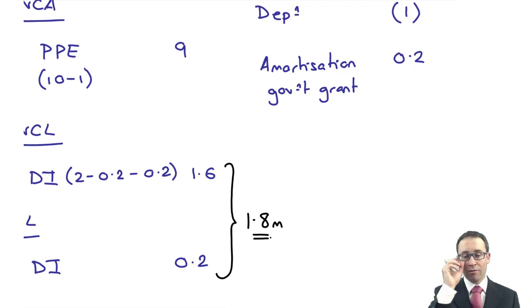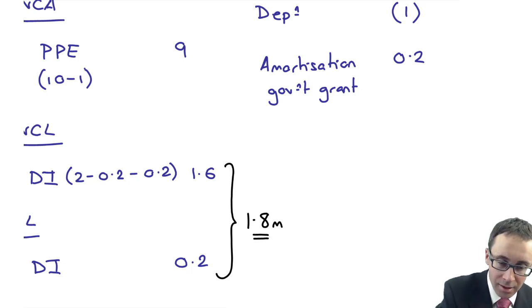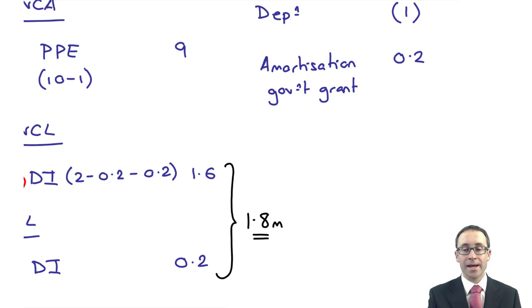And then 0.2 of that is a current liability. And the remainder is then non-current. So if you like, the deferred income for the non-current can be considered a balancing figure.